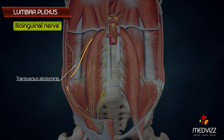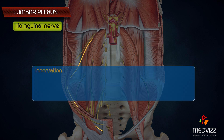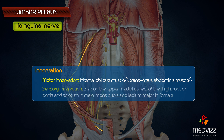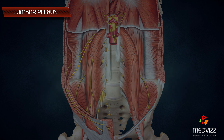The ilioinguinal nerve follows a similar course to the iliohypogastric nerve but at a slightly lower level. It pierces the transversus abdominis close to the anterior part of the iliac crest. Its motor innervation is mainly to the internal oblique and transversus abdominis muscles, and its sensory innervation covers the skin on the upper medial aspect of the thigh, root of the penis and scrotum in males, and mons pubis and labia majora in females.